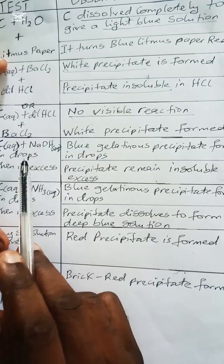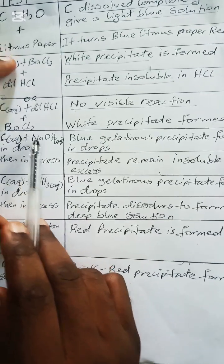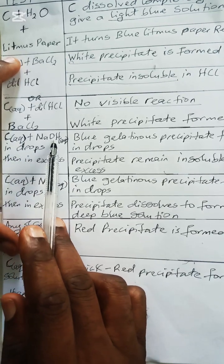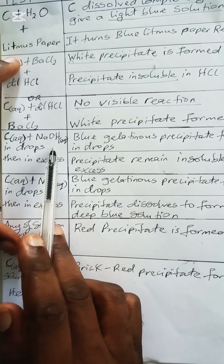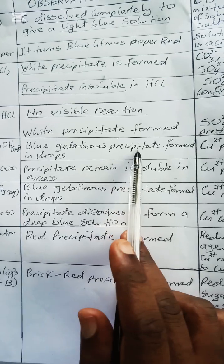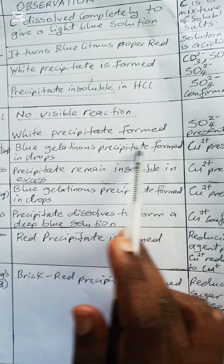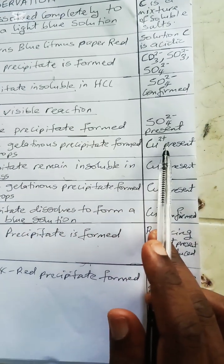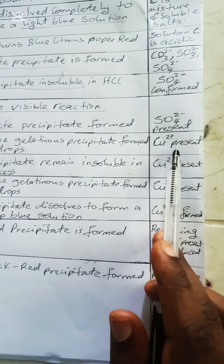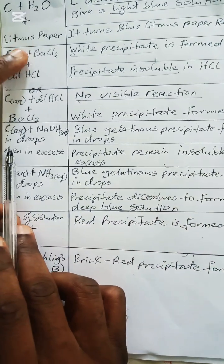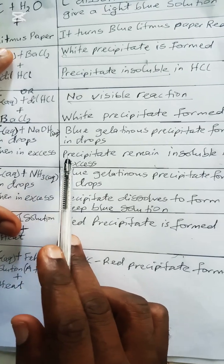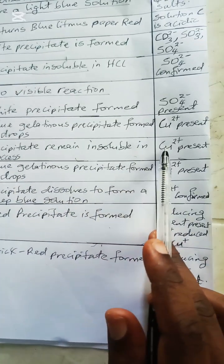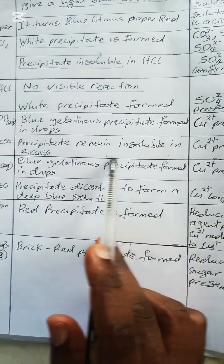Solution C plus sodium hydroxide in drops: you have a blue gelatinous precipitate formed — the inference is Cu²⁺ present. Then in excess sodium hydroxide, the precipitate remains insoluble in excess — Cu²⁺ is still indicated as present.